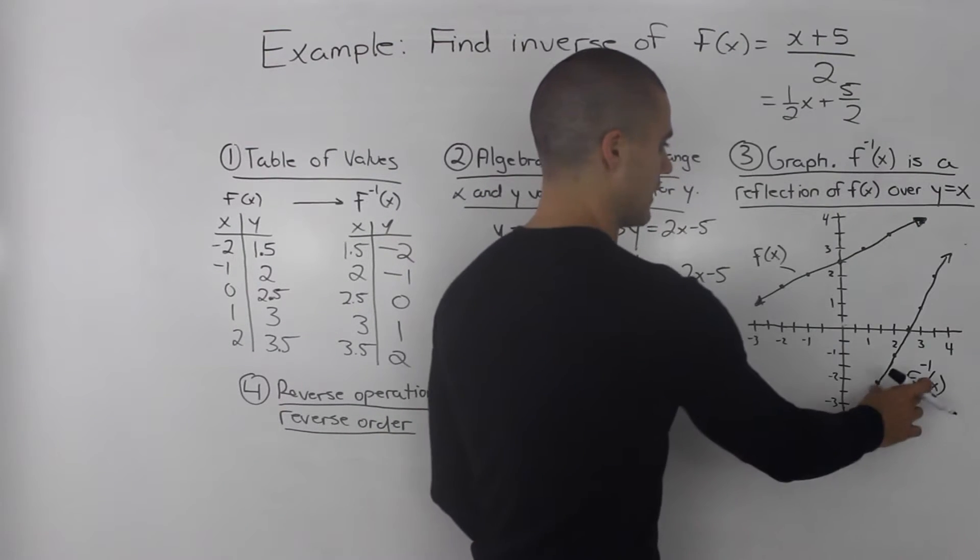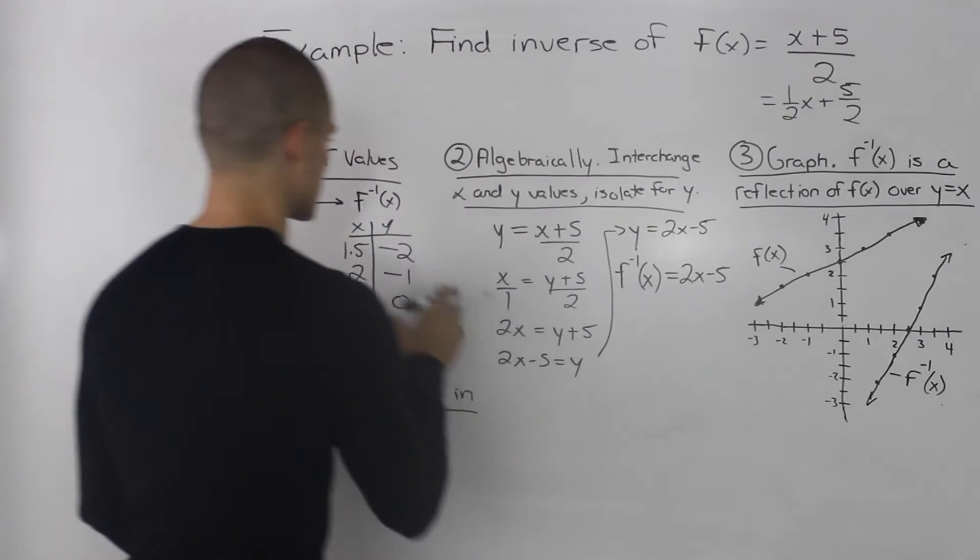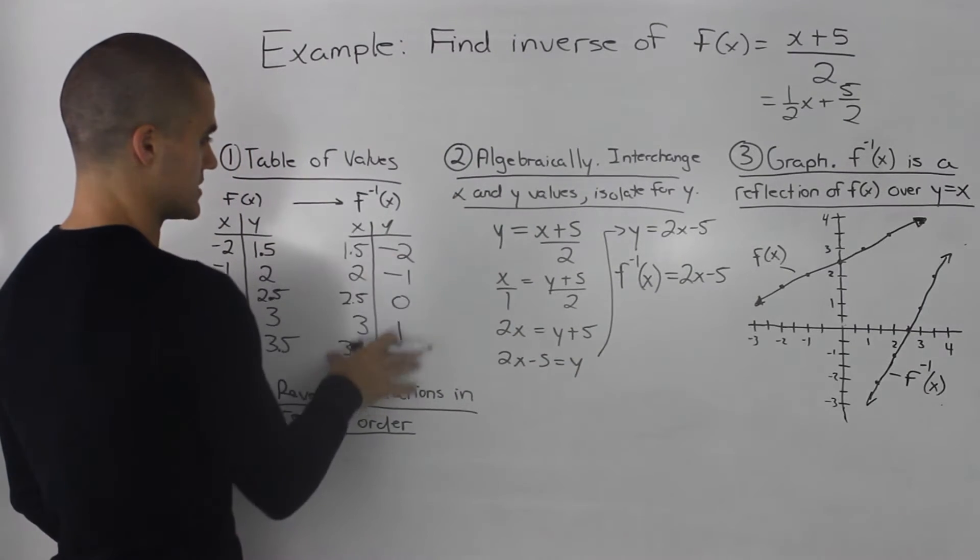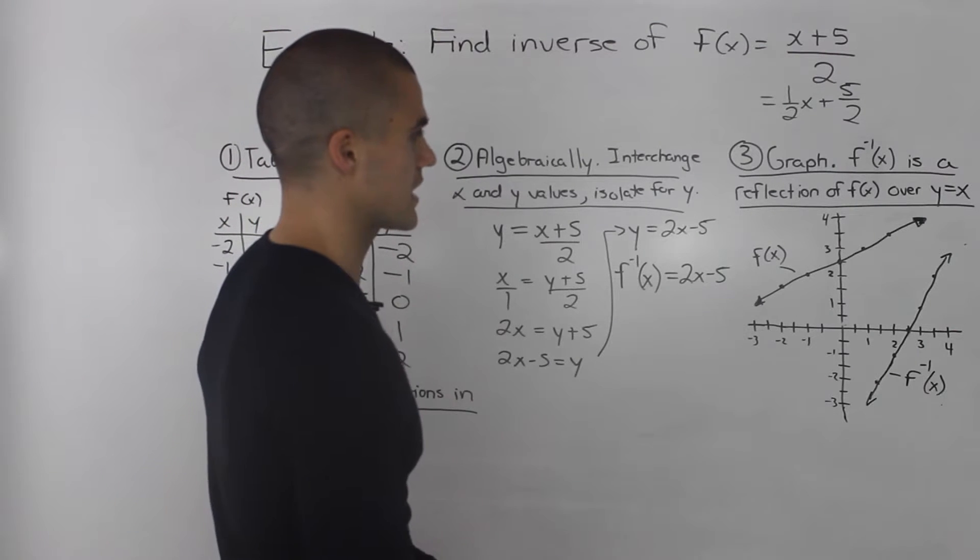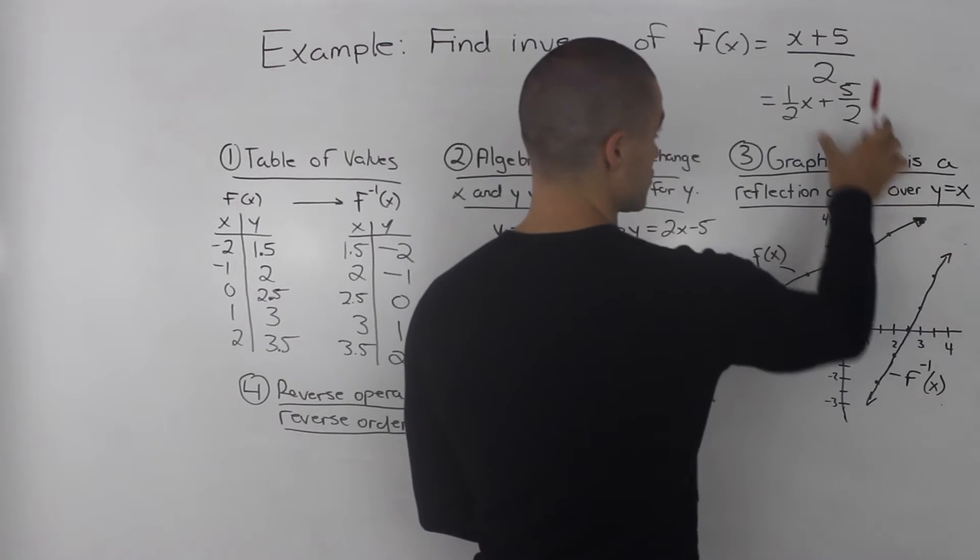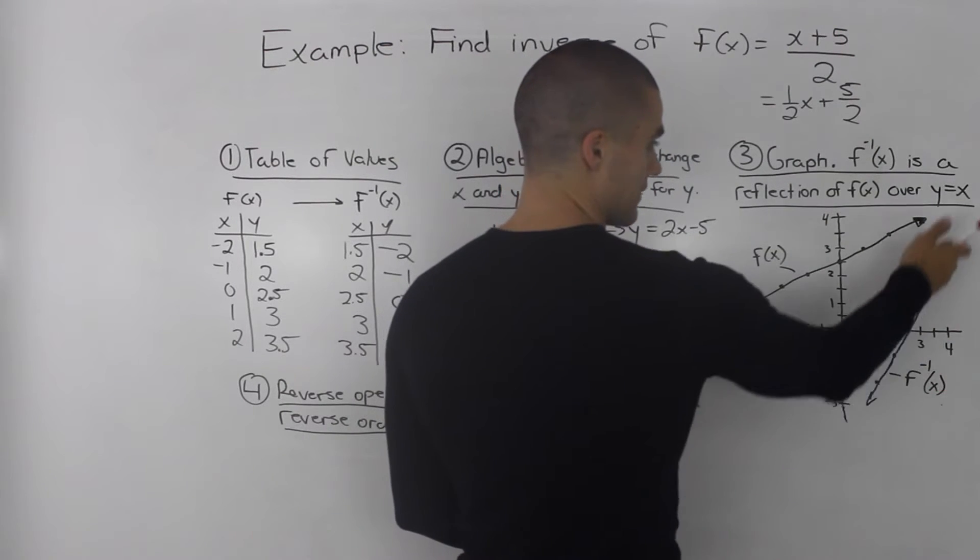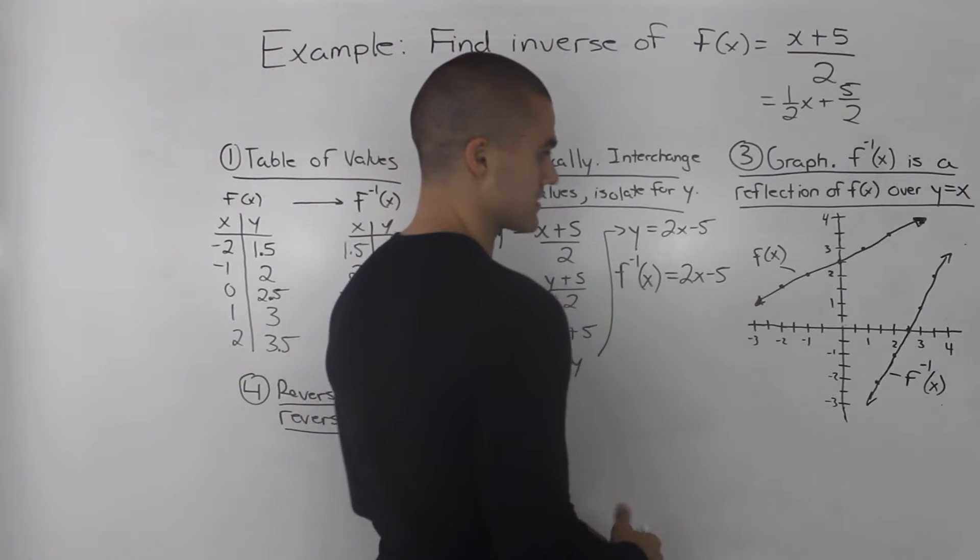It represents this line. And then finally, this is our inverse function here, 2x-5. I just took our points in the table of values from step 1 and I plotted them on the same graph. So again, this here represents our original function, f(x). And this here represents our inverse, 2x-5.